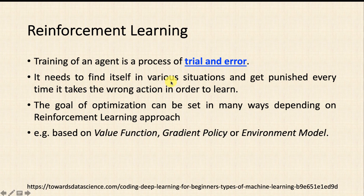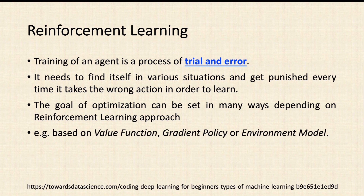The agent needs to find itself in various situations and gets punished every time it takes the wrong action in order to learn. A wonderful example is training a dog: if you tell a dog to catch a ball and the dog catches it and returns to you, you give it a reward. If the dog does not obey, you punish it and give no reward. Next time the dog understands that if it doesn't do the task, it won't get the reward — so it tries to catch the ball. This is the idea behind reinforcement learning.